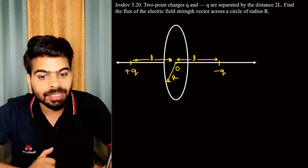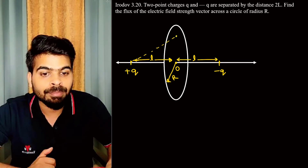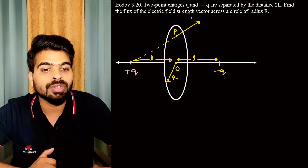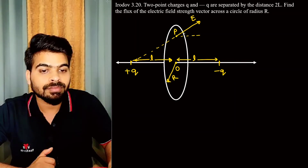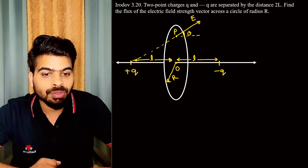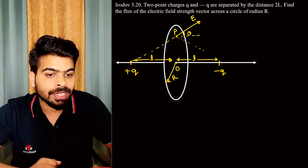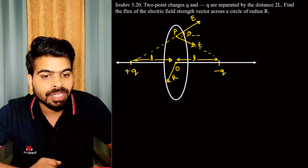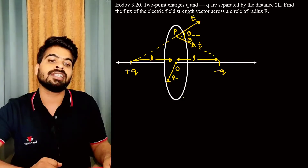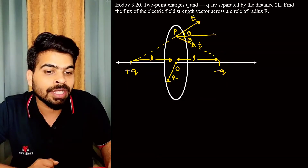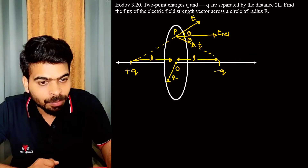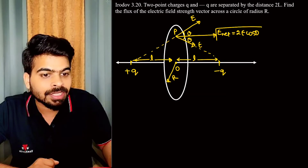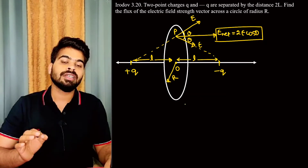Suppose we take a point P. Due to charge +q, the electric field at point P will be in a certain direction, making an angle theta. Due to charge minus q, the electric field is symmetrically in the other direction, also making angle theta at point P. The net electric field at point P equals 2E times cos theta.